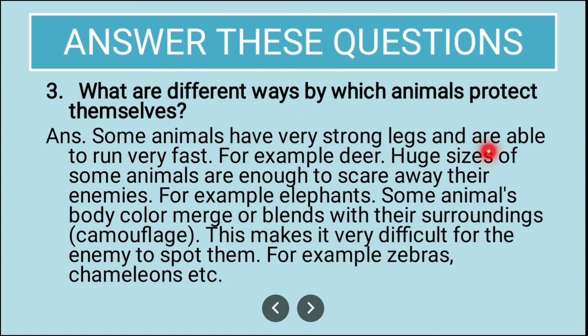What are the different ways by which animals protect themselves? Some animals have very strong legs and are able to run very fast — for example, deer. The large size of some animals is enough to scare away enemies — for example, elephants. Some animals' body color blends with the surrounding, which is called camouflage — this makes it very difficult for enemies to spot them. Examples are zebras and chameleons.